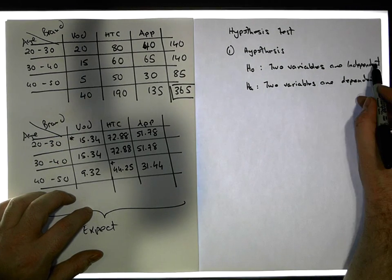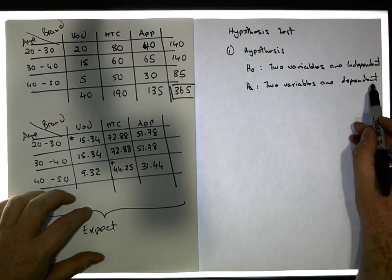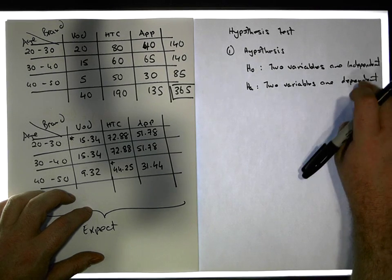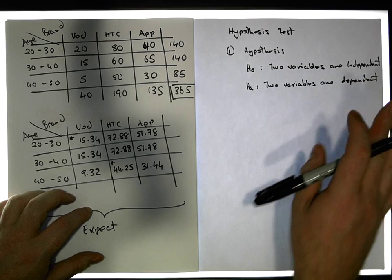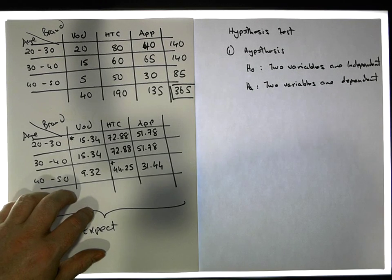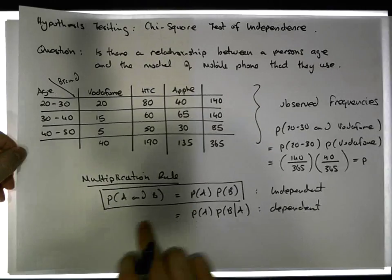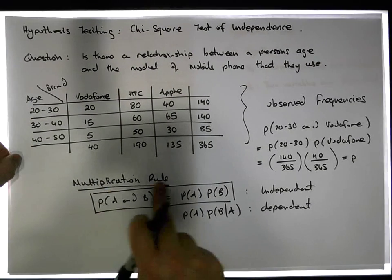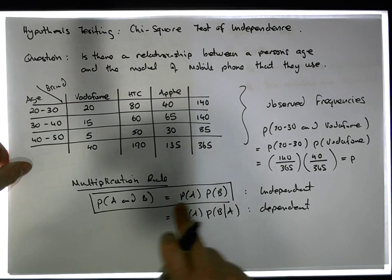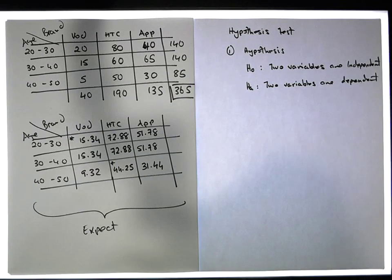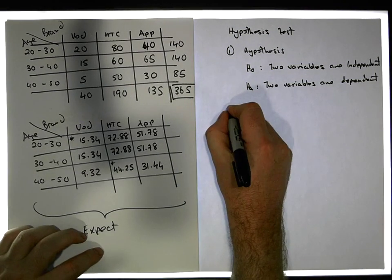Independent means there's no relationship; dependent means there is a relationship. You can see where this concept of dependence and independence is coming from — it's from the perspective we set up earlier, from the multiplication rule, where the assumption is that the two events are actually independent of each other. That's how we calculate our expected frequencies.